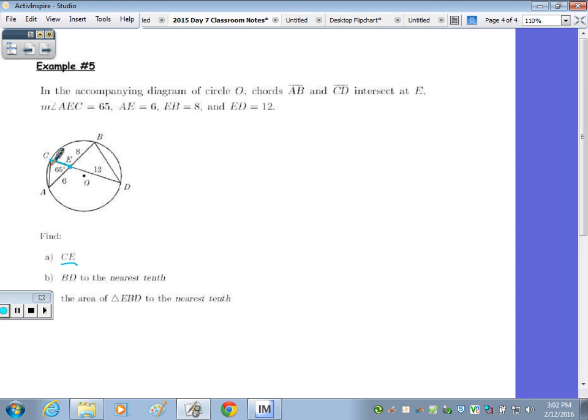When two chords intersect in a circle, so I'm going to call that X, this is 6, this is 8, this is, well, it's not perfect, 12. How do I find X? Maddie? So, 12 times X equals 8 times 6. So, this times this equals this times this. So, 12X equals 48. Divide by 12, and X is 4. So, CE is 4.